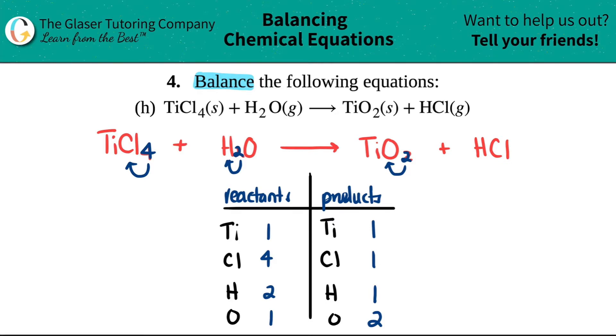So Chlorine. Can I multiply any number to get to this number right here? You always want to go up a number. You never want to go down. So one times what will get me to four? Oh, one times four will get me to four, right? And the number that you multiplied by, in this case four, will be the number that you put in front of your coefficient for that element.